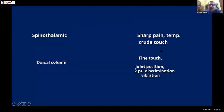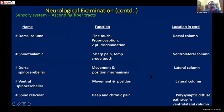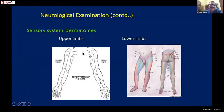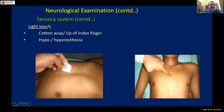You must remember dermatomes, so that at the end of the examination you can determine which dermatome is affected and thereby decipher the level of spinal cord injury. For light touch, use cotton wool as demonstrated, or the tip of the finger - both are internationally accepted methods.